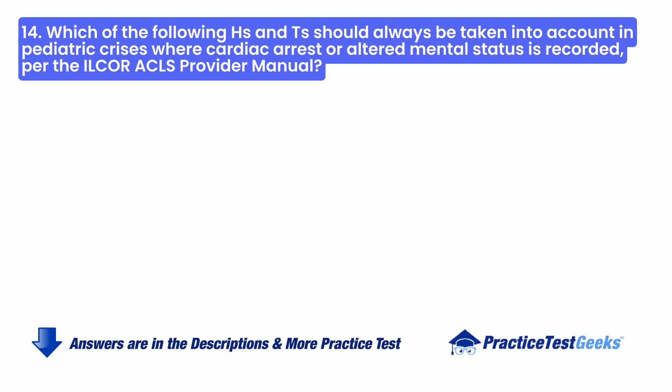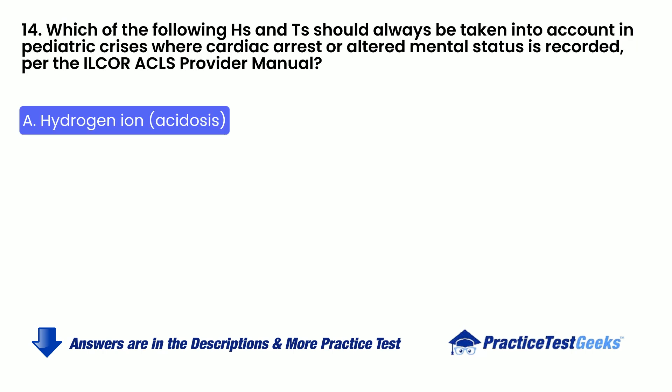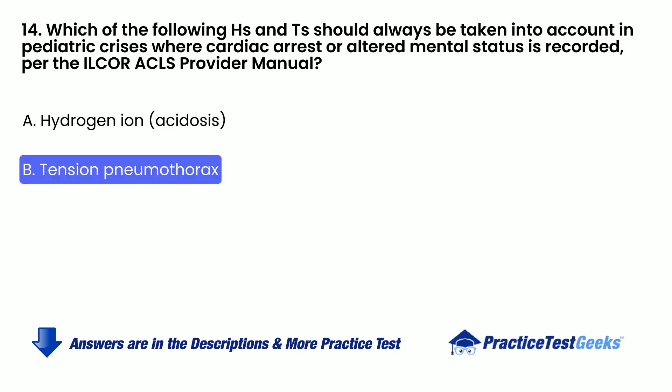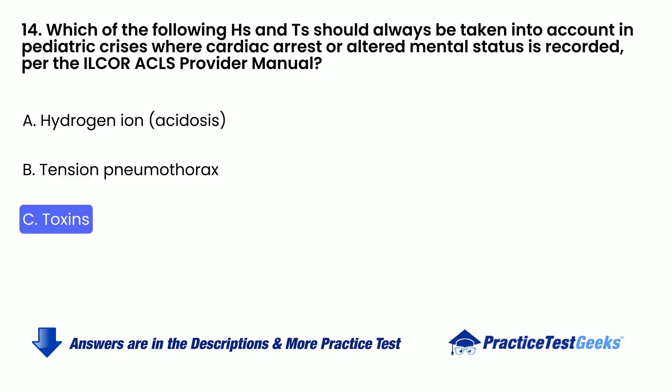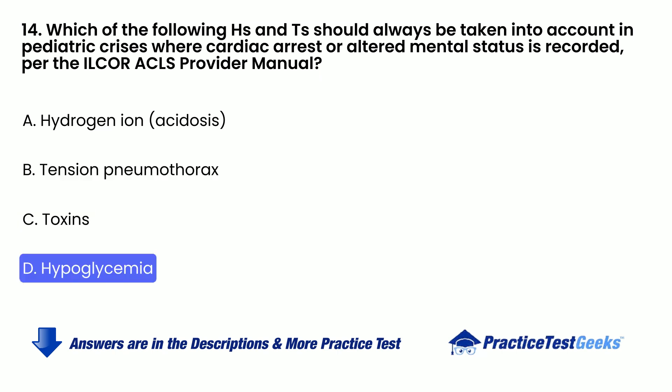Which of the following H's and T's should always be taken into account in pediatric crises where cardiac arrest or altered mental status is recorded, per the PALS Provider Manual? A. Hydrogen ion. B. Tension pneumothorax. C. Toxins. D. Hypoglycemia.